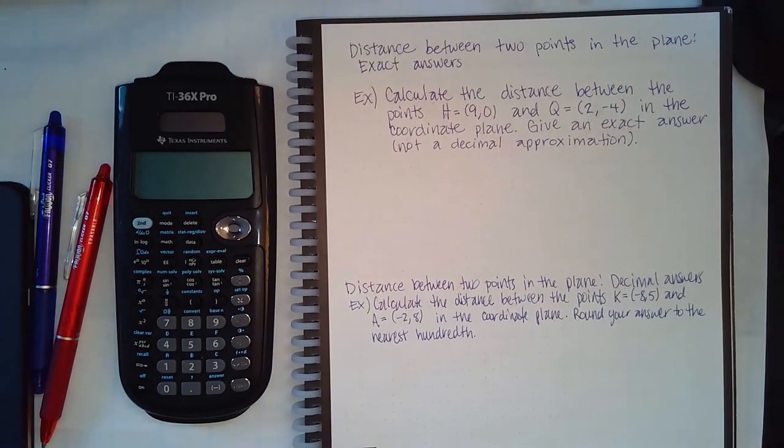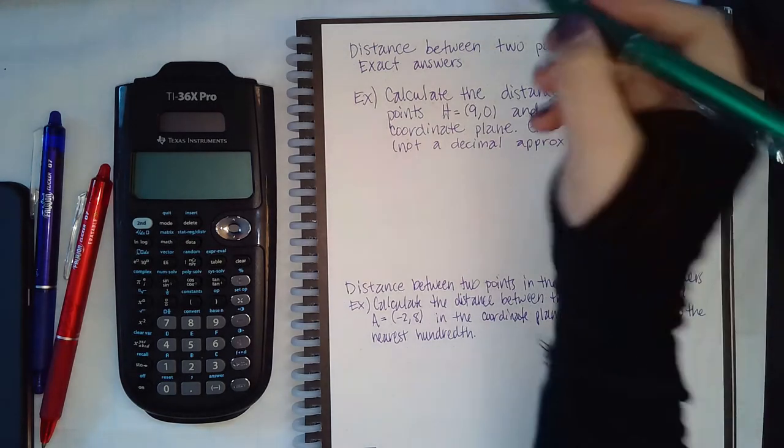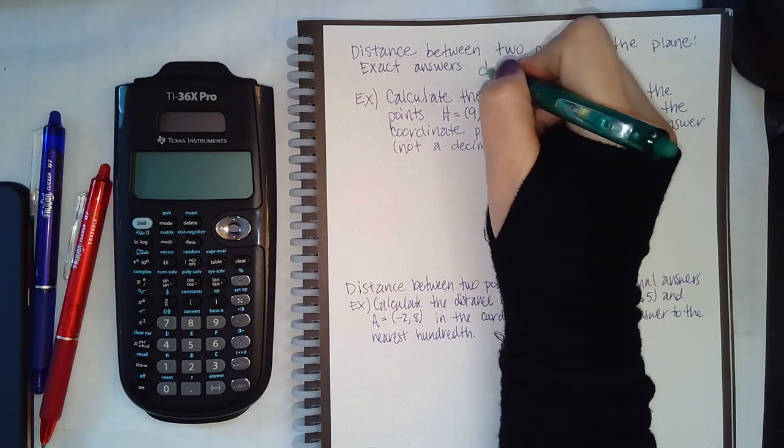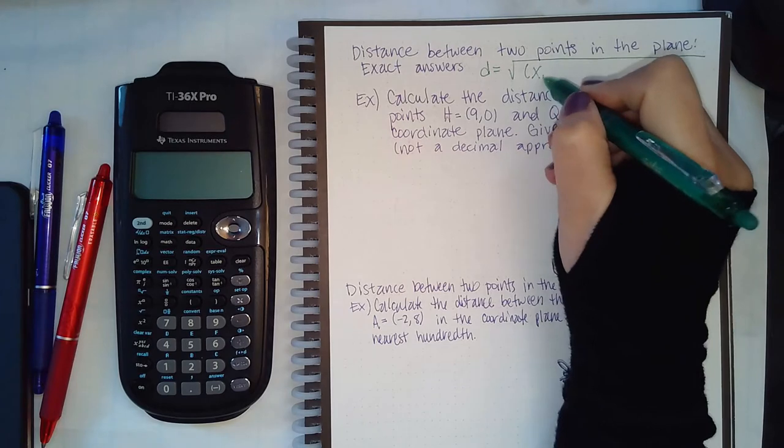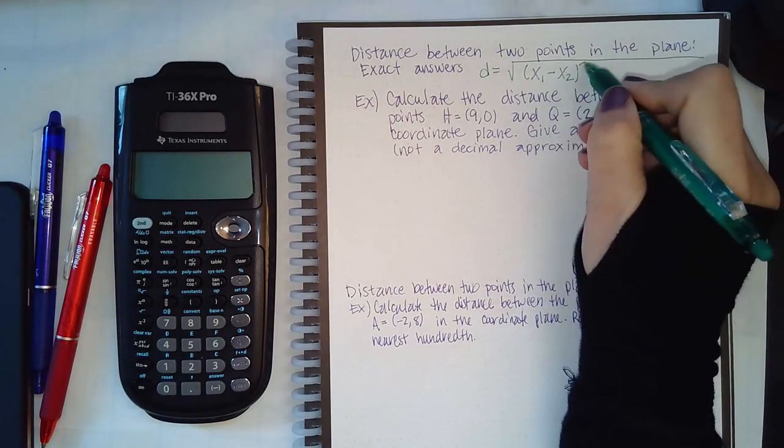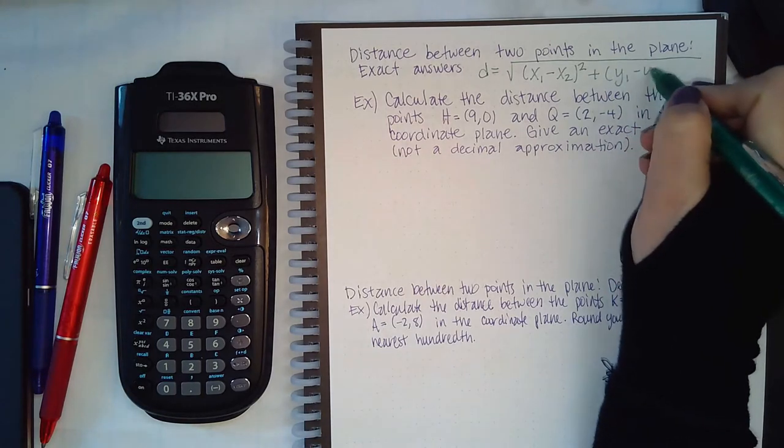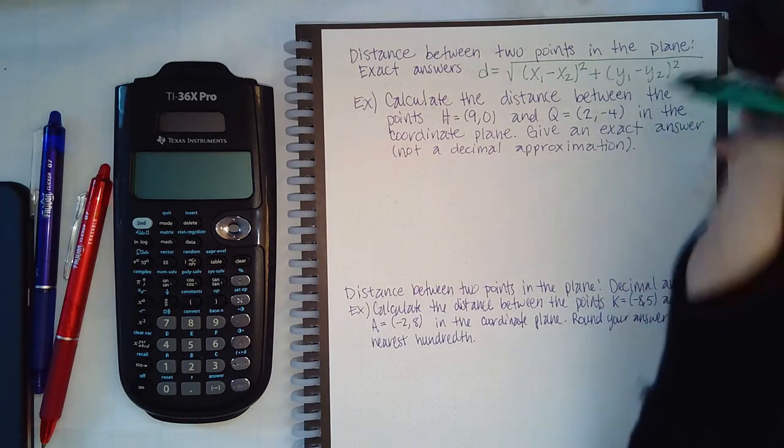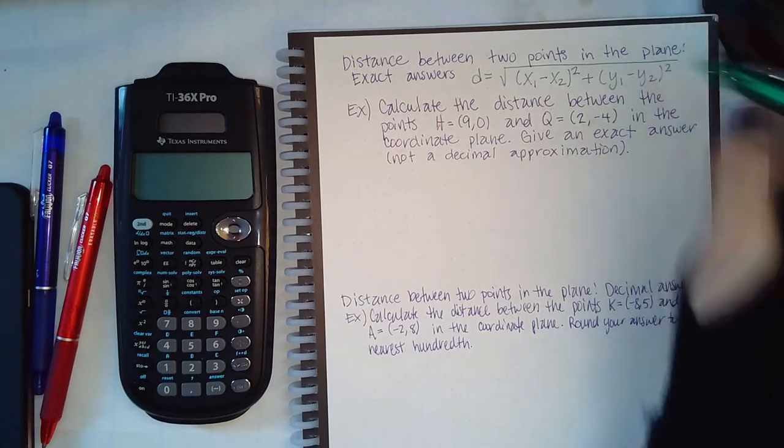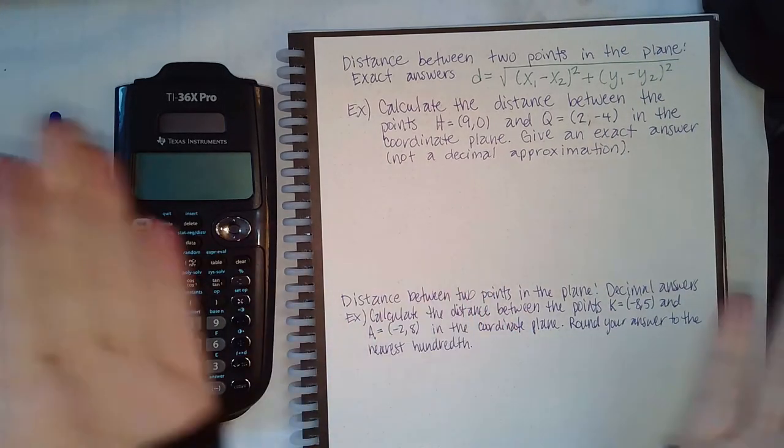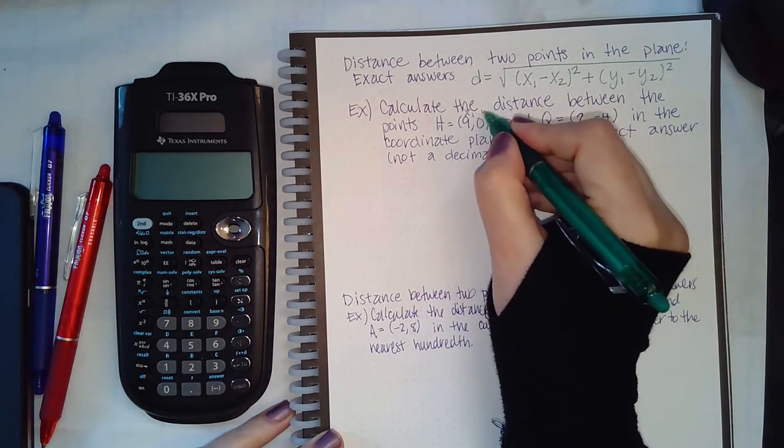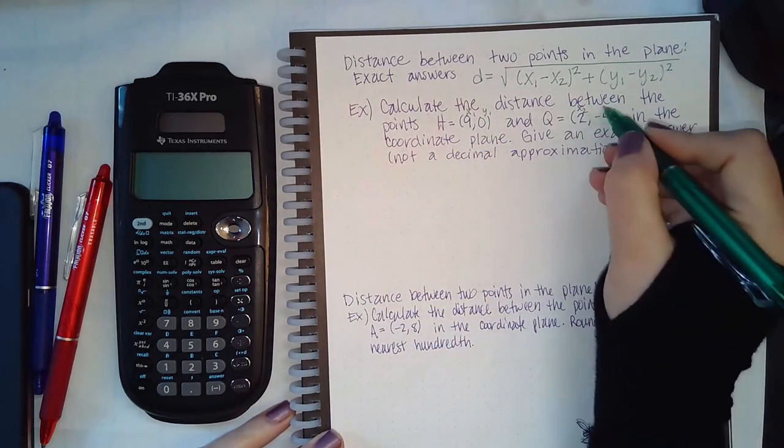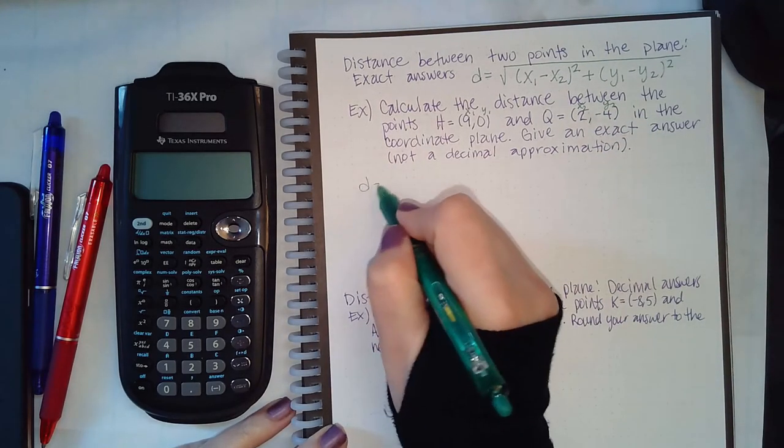Here is another topic: the distance between two points in the plane, and they want the exact answer. In order for us to find the distance between two points, we need to know the distance formula, and that is the square root of (x1 minus x2) squared plus (y1 minus y2) squared. Here they give us these two points. I'm going to call this x1, y1, x2, y2, and then we're just going to fill it in to the formula.